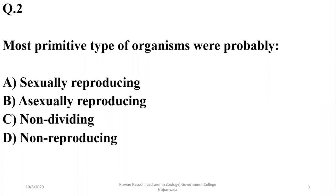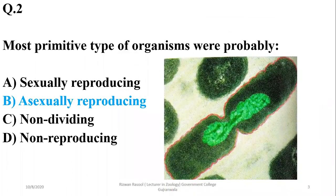The reproductive system actually works for the maintenance of a species or a population. The most primitive type of organisms are obviously simple and have simple strategies to divide. We can choose asexually reproducing organisms as their onset, such as bacteria, which were dividing with the help of binary fission.